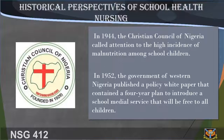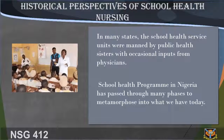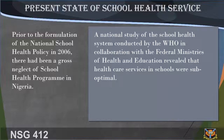In 1971, a school health service aided by a medical officer, nurses, and other health practitioners emerged at the federal government level in Lagos. Special clinics were set up to serve as treatment points for school children with minor ailments in some state capitals and large towns like Ibadan, Enugu, Kaduna, Benin City, Zaria, and Jos. In many states, the school health service units were manned by public health sisters with occasional input from physicians. The school health program in Nigeria has passed through many phases to metamorphose into what we have today.